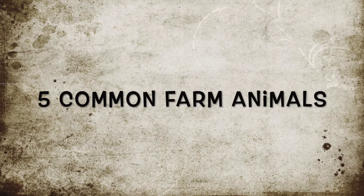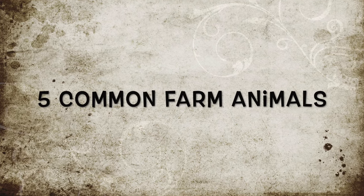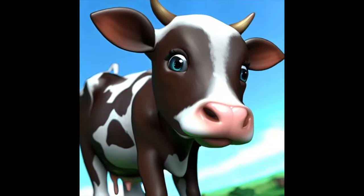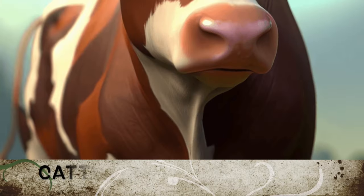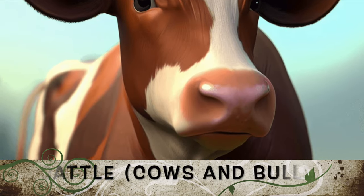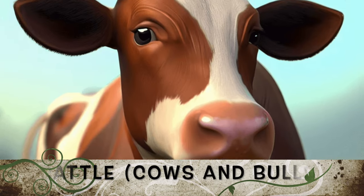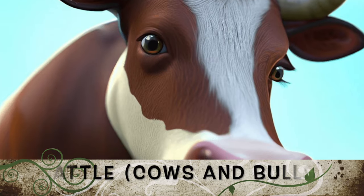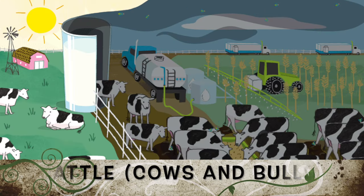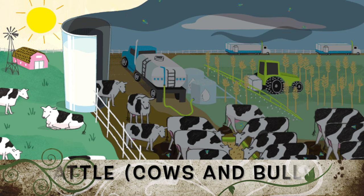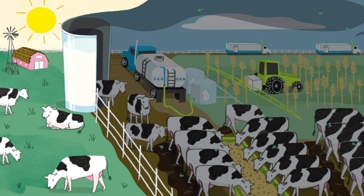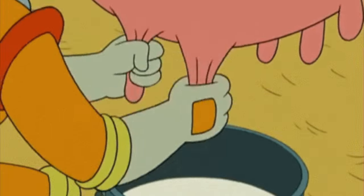Common Farm Animals. 1. Cattle — Cows and Bulls. Large herbivores, with cows being raised for milk and bulls often used for breeding or beef. The purpose is to raise beef production, meat, or dairy production, milk.